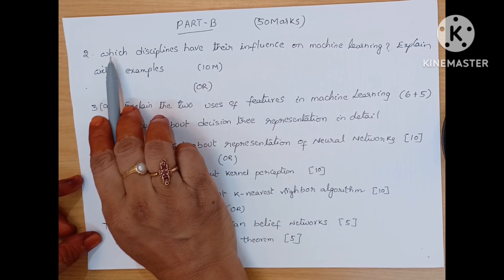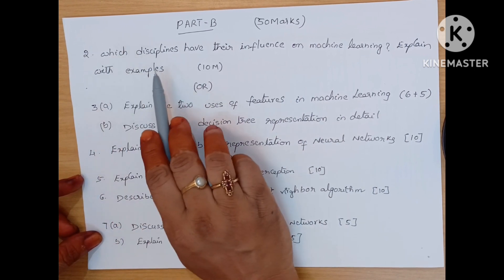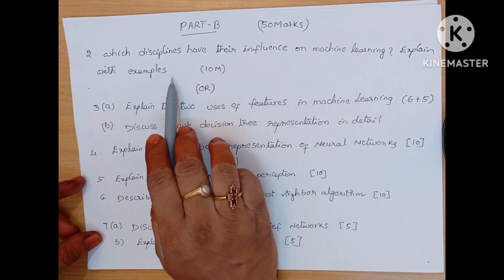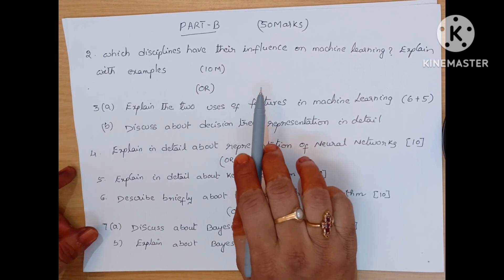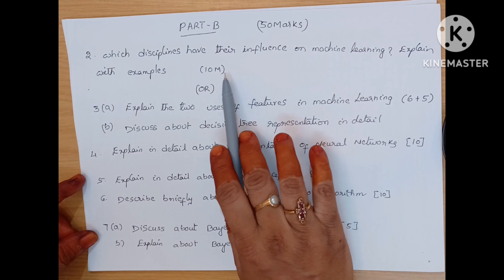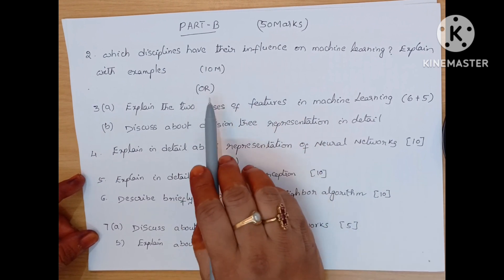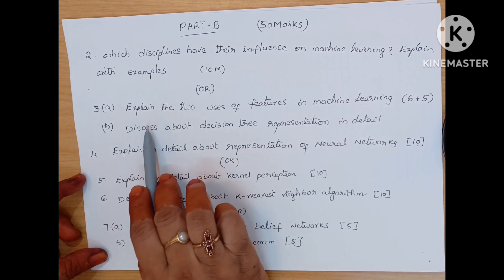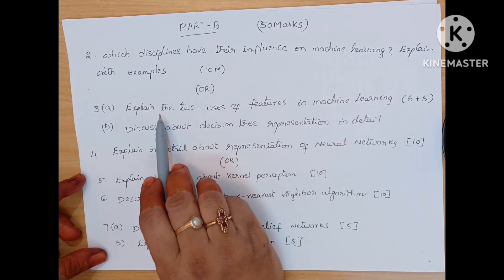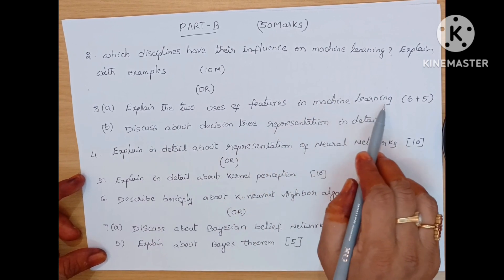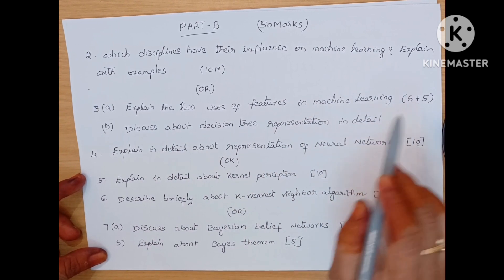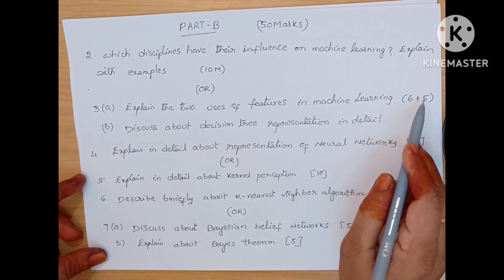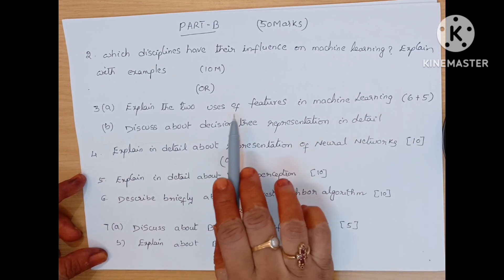Second question in Part B comes from Unit 1: 'Which disciplines have their influence on machine learning? Explain with example.' That means in which areas machine learning is mostly used — explain with your own example. This is a direct 10 marks question. Or, as an internal choice, the question is divided into two parts: 6 plus 5 marks. Part A bit is explain the uses of features in machine learning, 6 marks. And B bit is discuss about decision tree representation in detail, 5 marks.